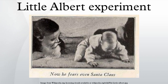Little Albert responded to the noise by crying and showing fear. After several such pairings of the two stimuli, Albert was again presented with only the rat. Now, however, he became very distressed as the rat appeared in the room. He cried, turned away from the rat, and tried to move away. Apparently, the baby boy had associated the white rat with the loud noise and was producing the fearful or emotional response of crying.